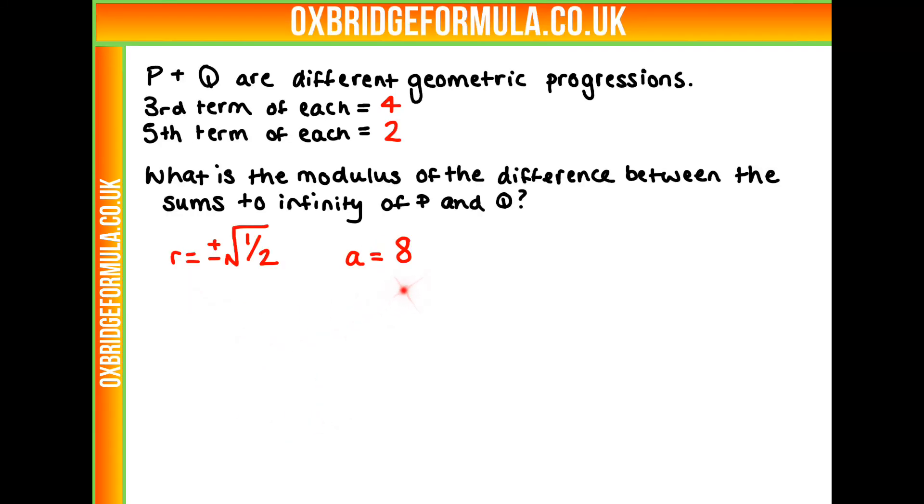We have our r and our a values now. Where can we go from there? We're looking for the sums to infinity. What is the general equation for our sums to infinity?